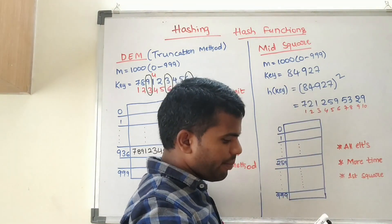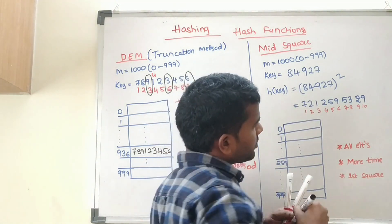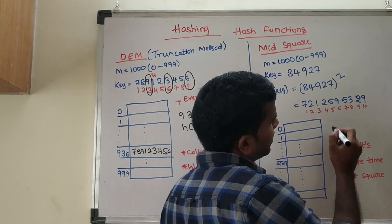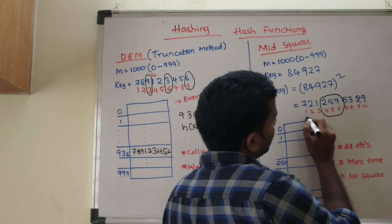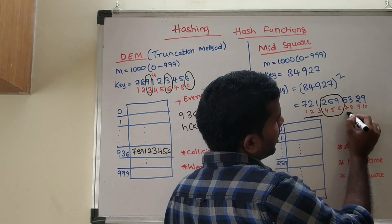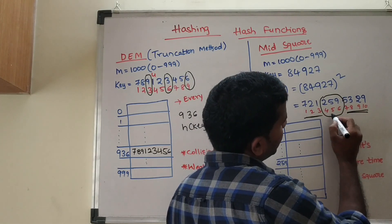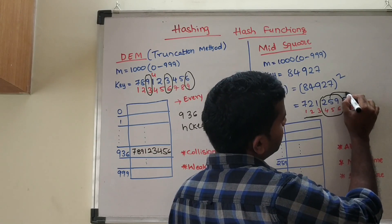Then we will take the middle numbers. See, you can take these three as the middle number because you are leaving three digits here and four here.